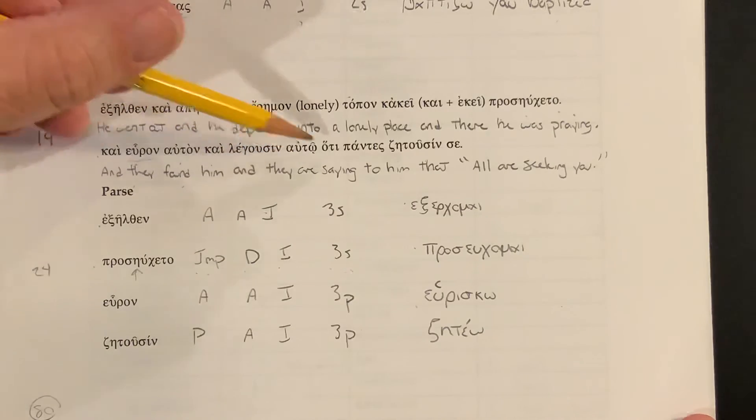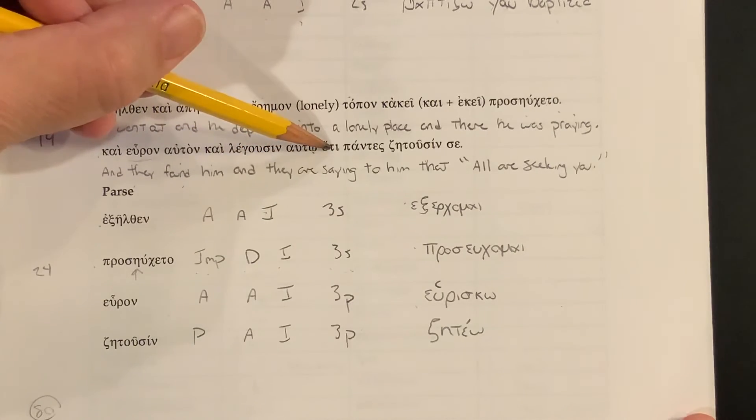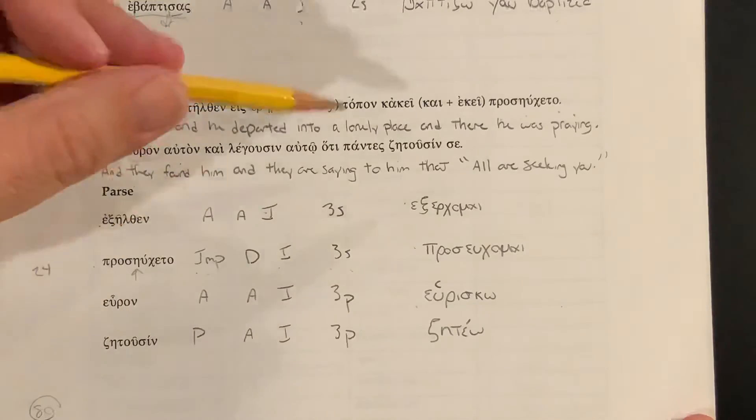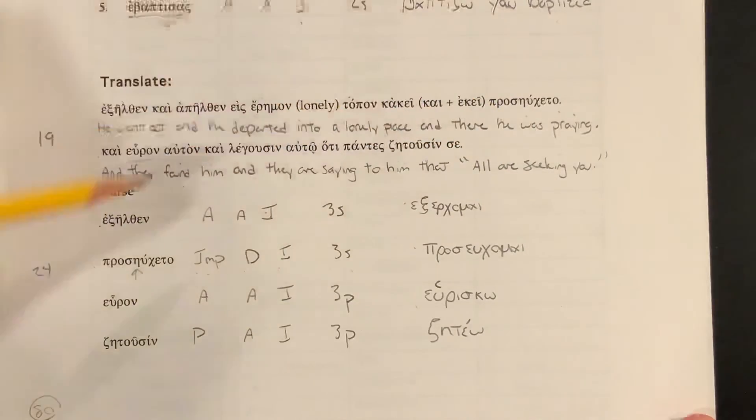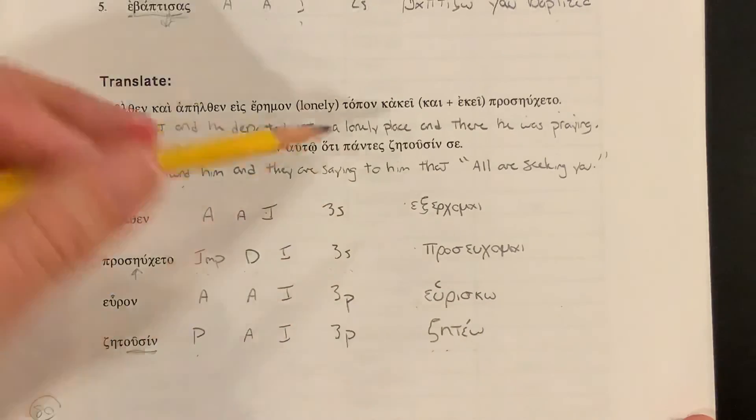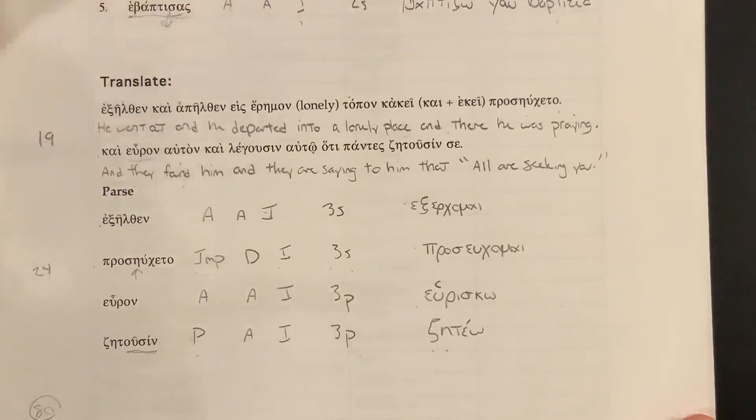And legousin, they are saying to him that, they're saying, what are they saying? They're saying, pontes zetusin se. They're saying, all are seeking you. Zetusin is from zeteo. This is a present. So usin here is our ending. Zeteo. And so as we go back to our present tense, o, eis, ei, omen, ete, usin. Usi. Present, active, indicative, third plural. They are seeking. So pontes zetusin se. They are seeking you.